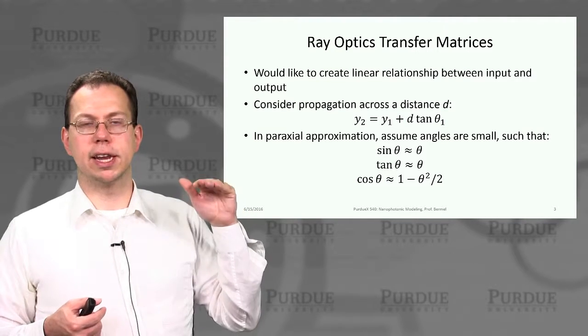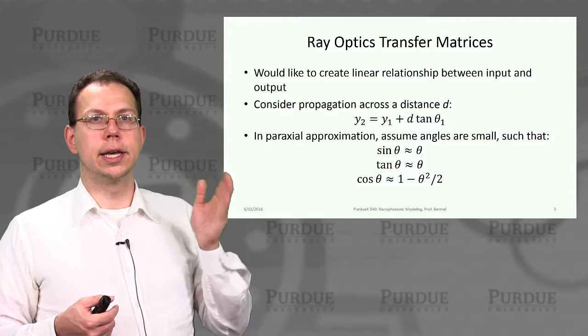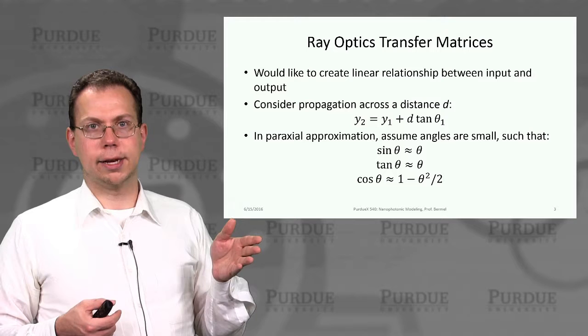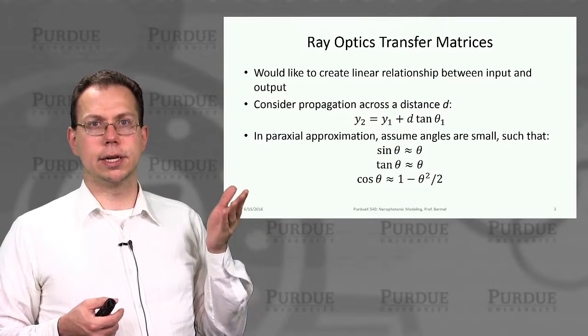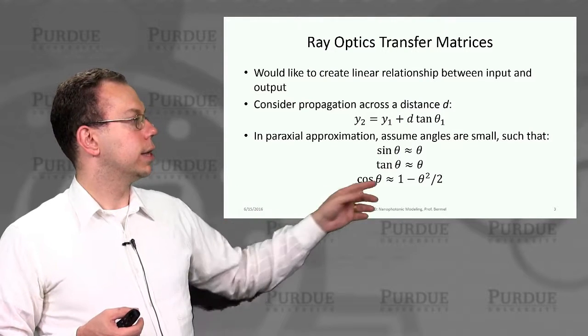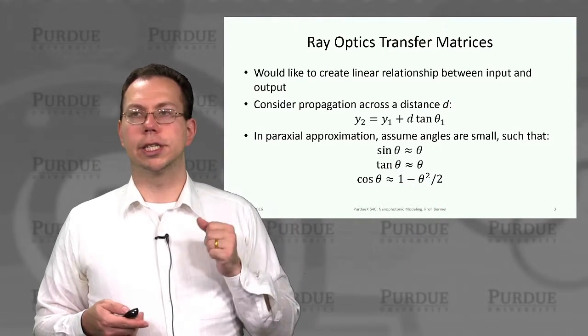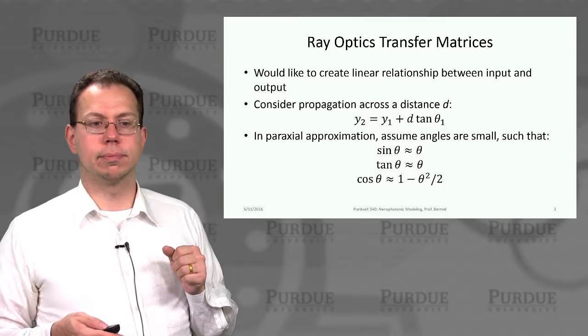We can assume if the angles are small, so things are propagating close to the optical axis, then tangent of theta 1 is approximately theta 1, sine of theta 1 is approximately theta 1, and cosine of theta 1 is approximately 1 minus theta 1 squared over 2, which we often write as 1 for simplicity.